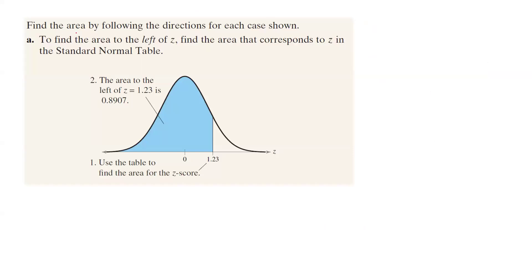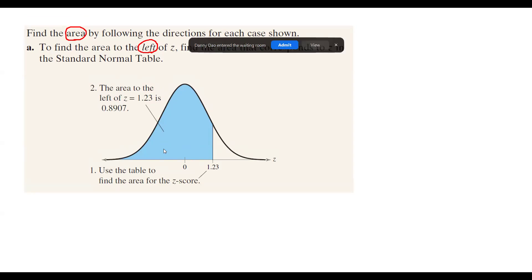The most important part in dealing with either normal or standard normal distributions is finding the probability — in other words, the area. Whenever we talk about probability, we're talking about the area below the curve. There are three different scenarios. The first scenario is finding the area to the left side of z, where z is given as 1.23. The shaded area on the left-hand side represents this probability. Let me share the screen to show you how to use the calculator.